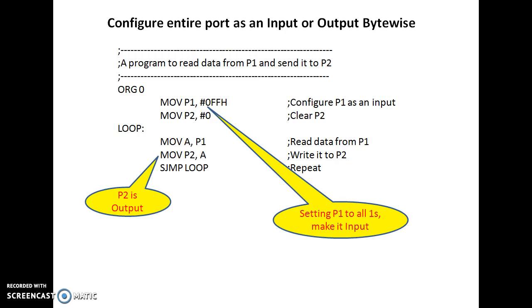To configure input we have to send 1 to all latches of port which will disconnect the lower transistor of output circuitry and the input circuitry will be enabled by reading instructions. So when we write 1, port becomes input.